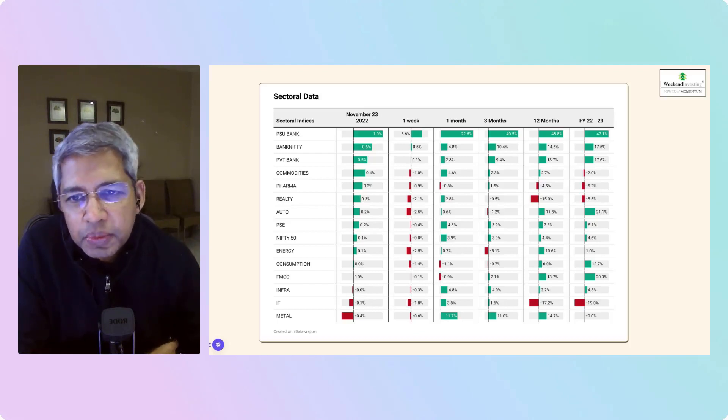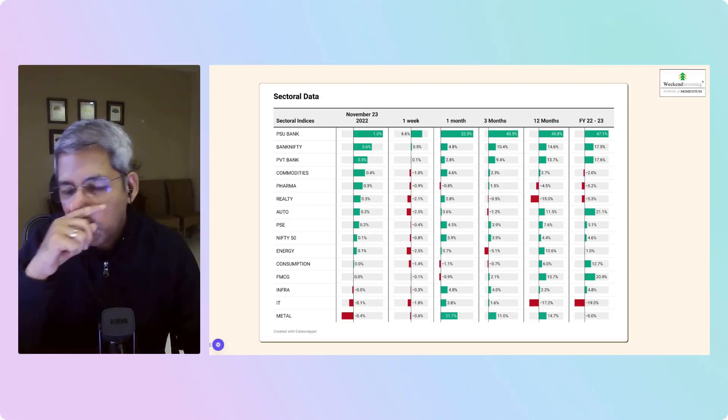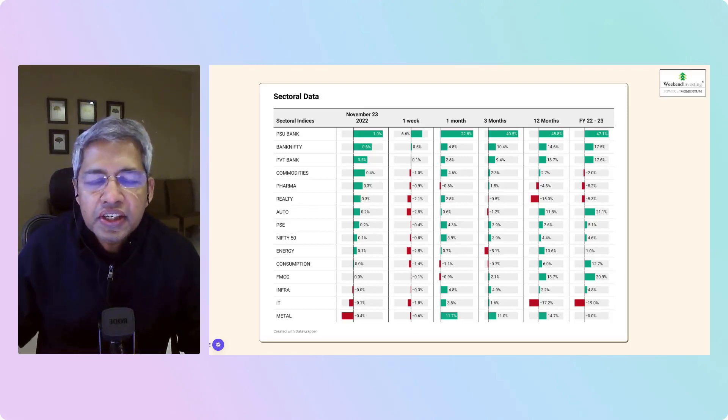Bank Nifty closed up 0.6%, private banks also up 0.5%. So banking is the only sort of safe haven right now which is keeping the strength in the market.